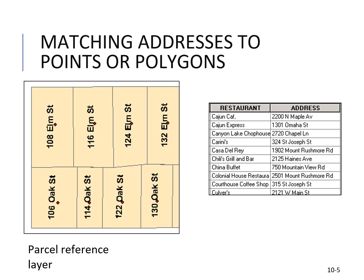Matching addresses to polygons is something you can also do with geocoding. Instead of your address being matched to a street, it is matched to an actual polygon shapefile. You can see the table showing the location and its address, and this is a parcel reference layer being represented.